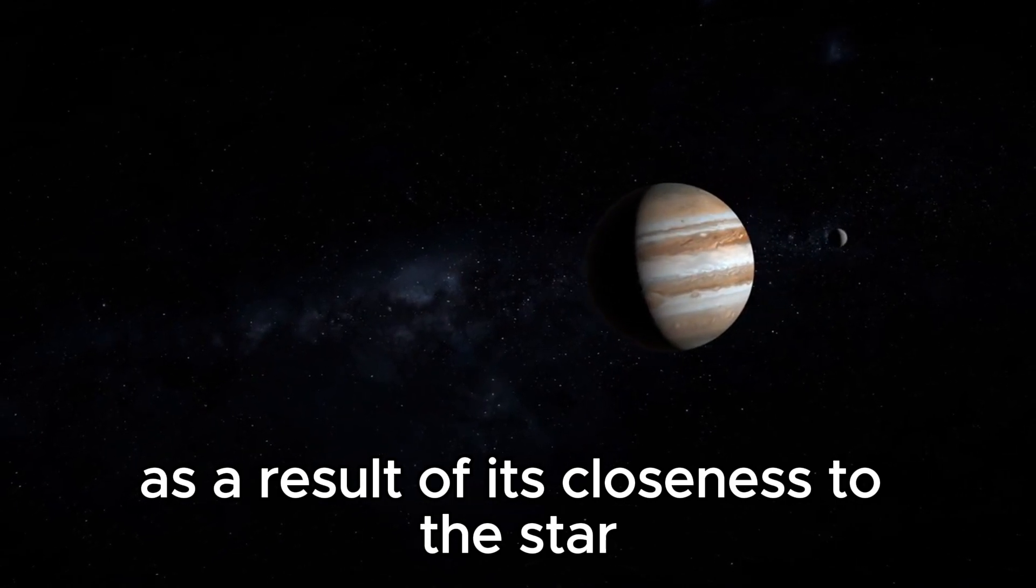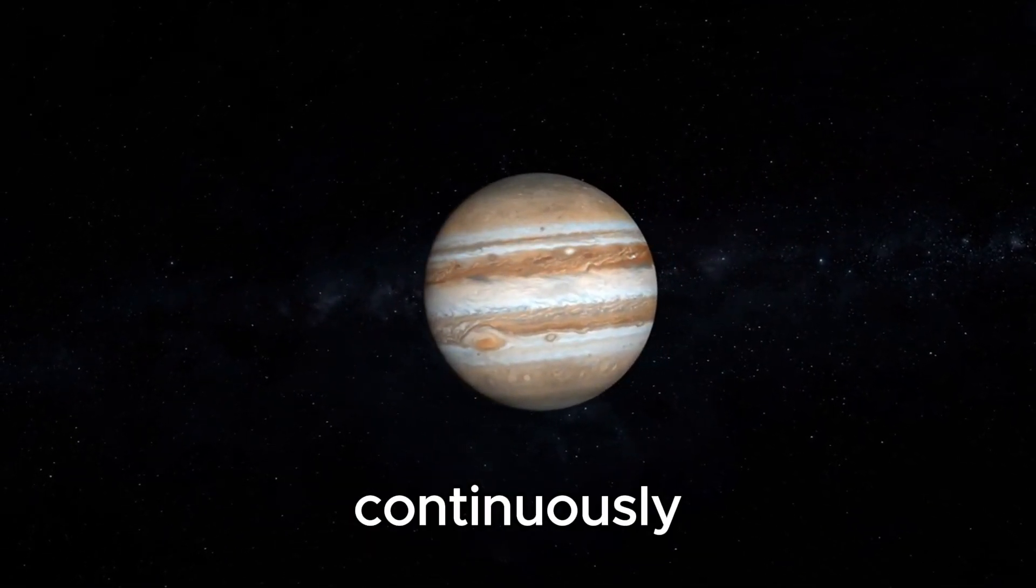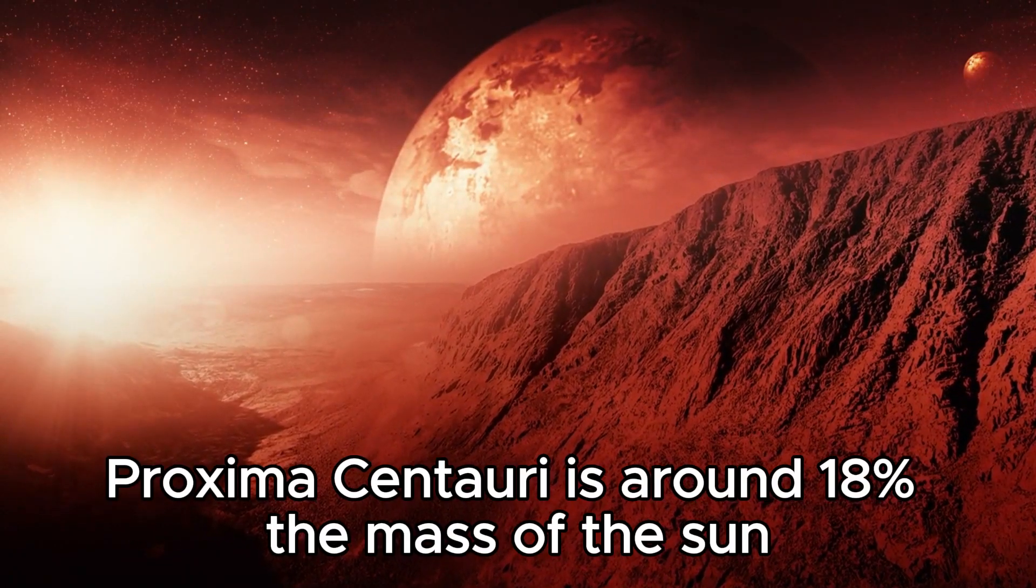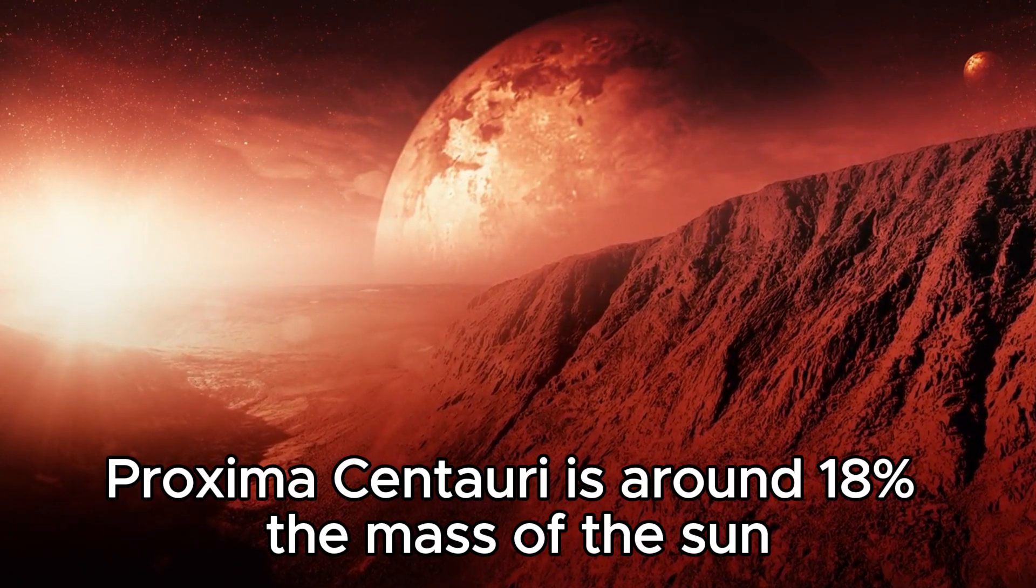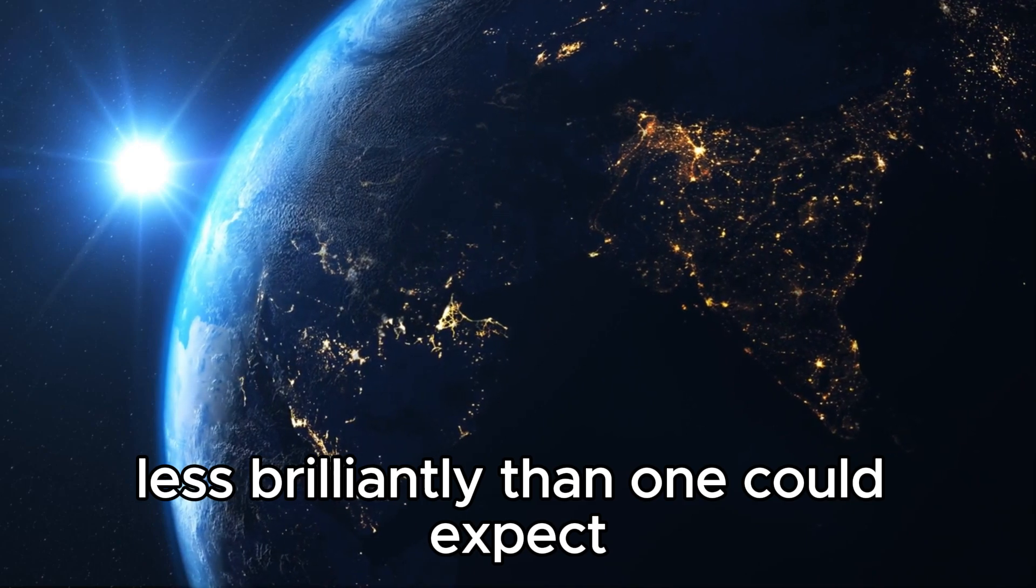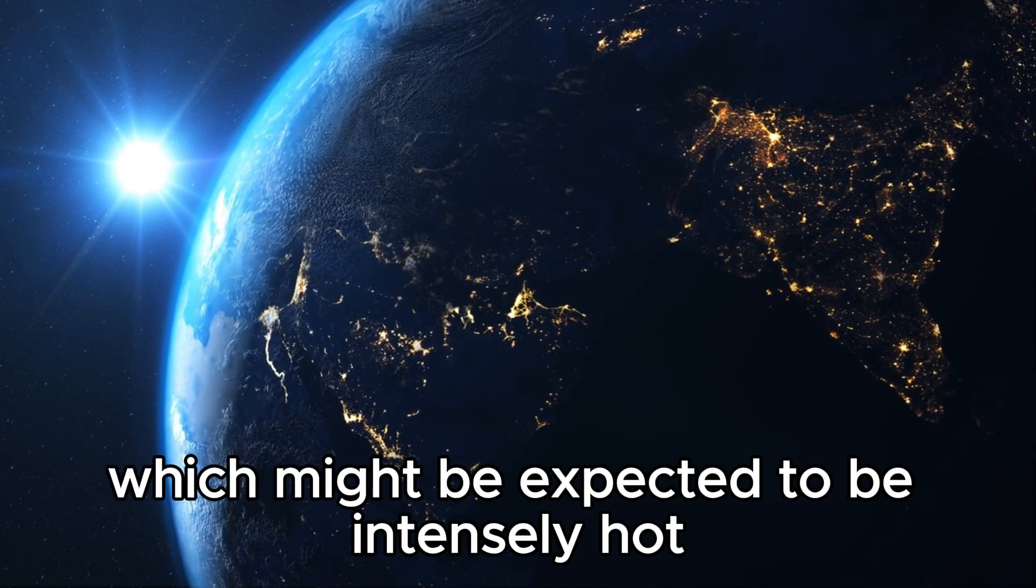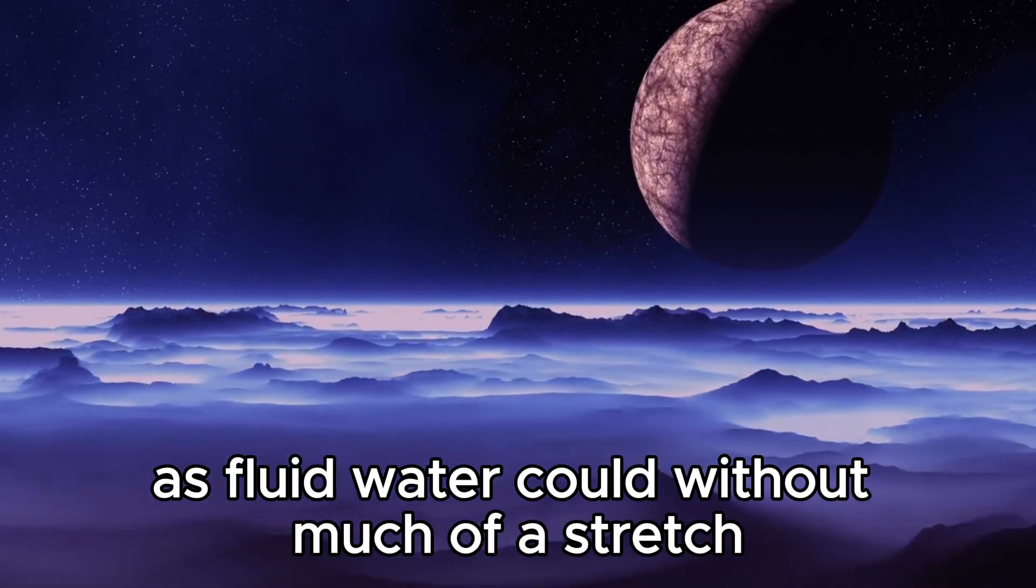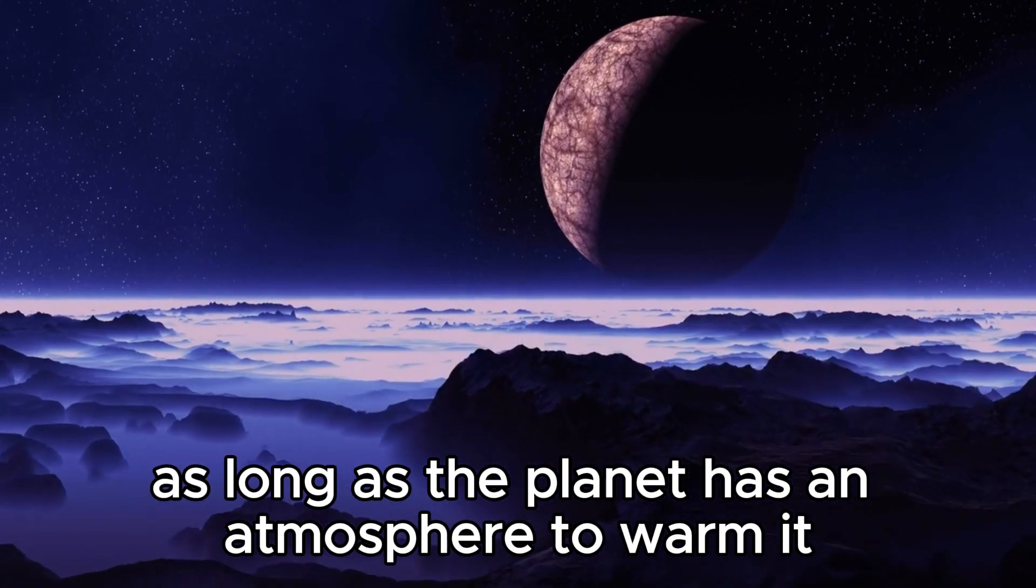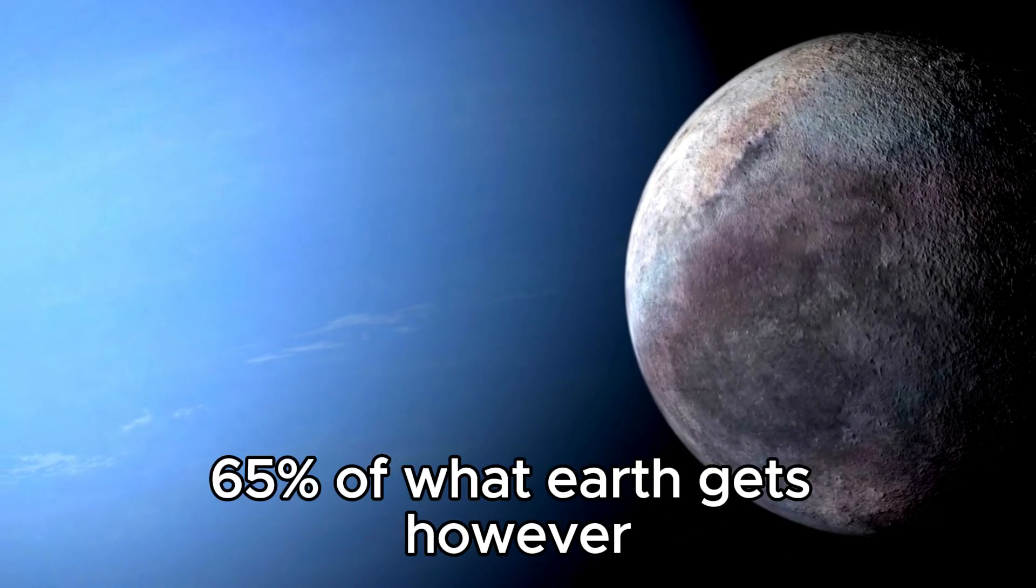As a result of its closeness to the star, Proxima b is believed to be tidally locked, continuously showing the same side to the star as the moon does in reference to Earth. Proxima Centauri is around 18% the mass of the sun and consumes far less brilliantly than one could expect for a planet so close to its star. Liquid water could easily exist on Proxima b as long as the planet has an atmosphere to warm it, since the aggregate energy arriving at it from the sun is only 65% of what Earth gets.